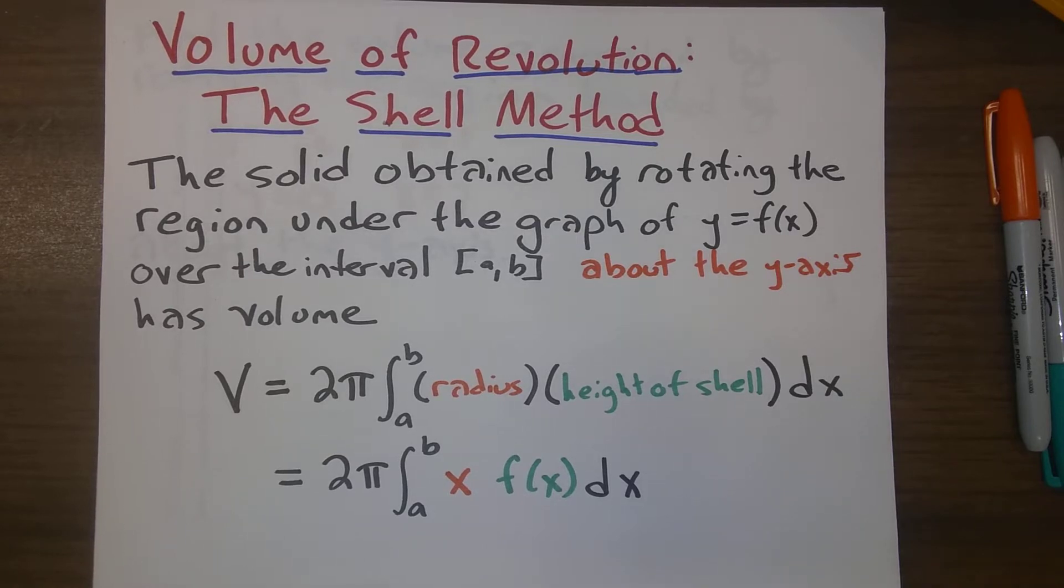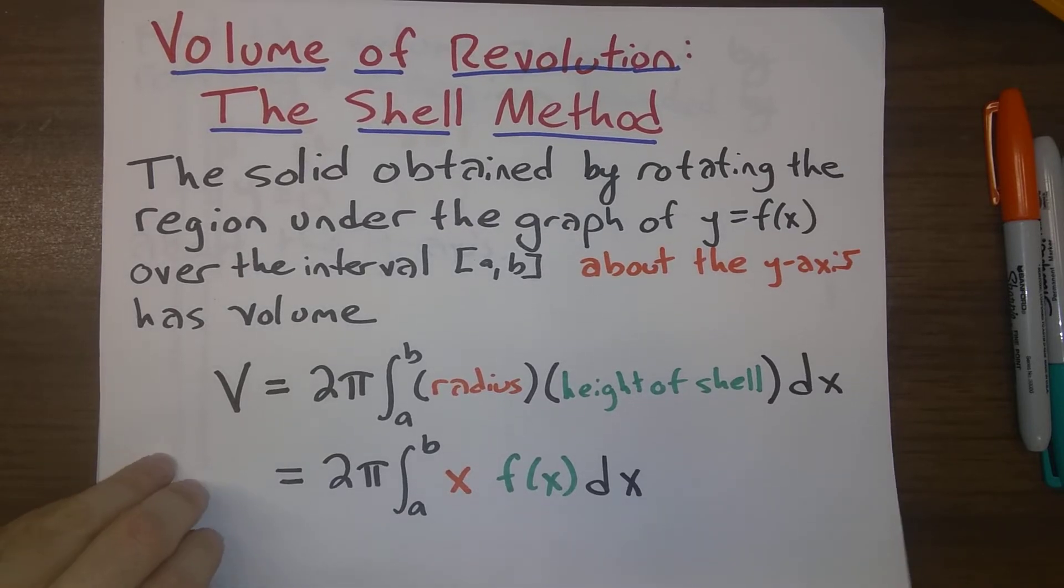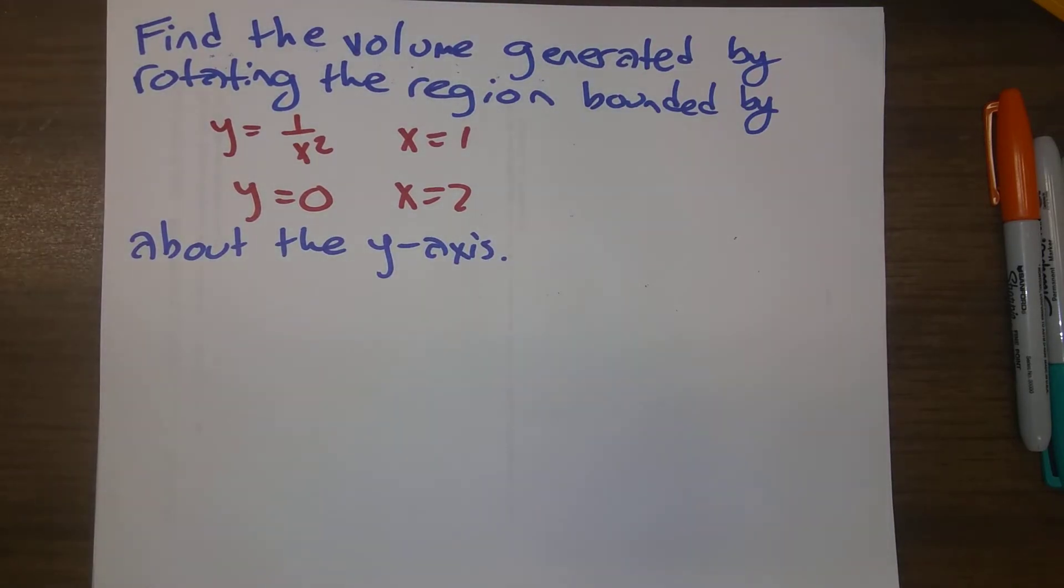Let's actually see an example of doing some calculations with this. So let's say that we want to find the volume generated by rotating the region bounded by y equals 1 over x squared, y equals 0, x equals 1, and x equals 2 about the y-axis.